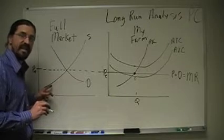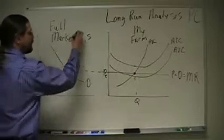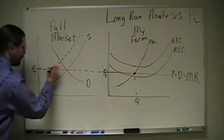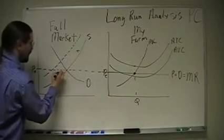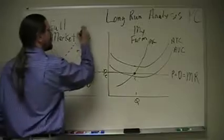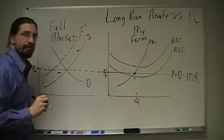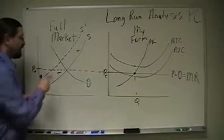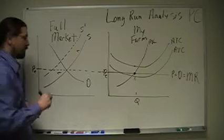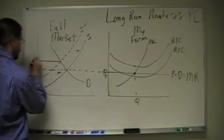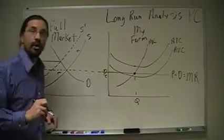Supply is going to decrease. Well, if supply decreases, our supply curve shifts to the left. Here's our new supply curve. When supply shifts to the left, what happens to price? It goes up.